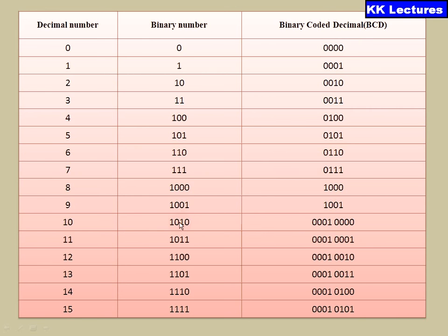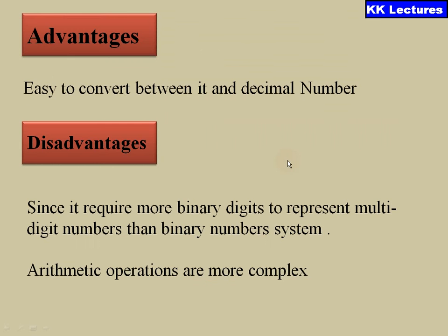For decimal 10, it is expressed as 1010 in binary. But in BCD, 1 is expressed as 0001 and 0 is expressed as 0000 — meaning each and every digit is expressed separately in 4-bit format in binary coded decimal.